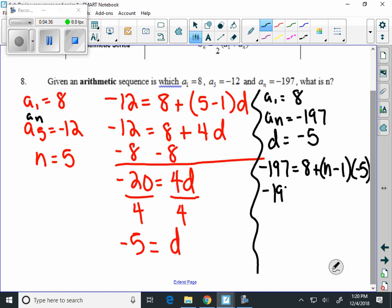So we have negative 197 equals 8 plus negative 5 times n is negative 5n. Negative 5 times negative 1 is positive 5.